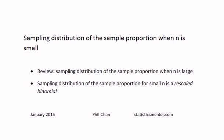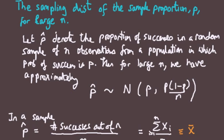In pretty much all standard stats books — stats for business and economics, stats for psychologists — you're given the sampling distribution of the sample proportion for when the sample size is large. What I'm going to do in this video is show you a more rare result that you can't find in intro textbooks: the sampling distribution of the sample proportion when n is small. We'll start with a review of the large-n result, then show that the sampling distribution when n is small is a rescaled binomial.